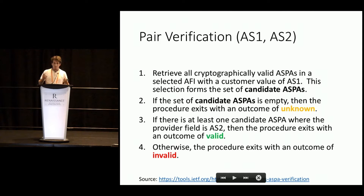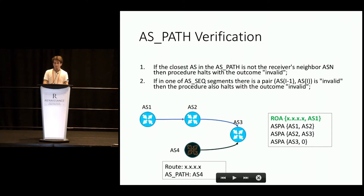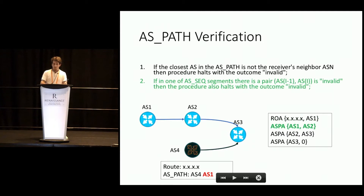The verification procedure is very similar to route origin verification. We are splitting AS paths into pairs where prepend values are ignored. For each pair, we are retrieving candidate ASPAs. If the list is not empty, we check if there is an overlap. If there is no overlap, the outcome is invalid; if there is an overlap, the outcome is valid — just like ROAs. If autonomous system 4 advertises a prefix from its own autonomous system number, it will be detected using ROAs. If it then tries to add autonomous system 1 at the beginning of the AS path, it will be detected because autonomous system 1 has authorized only autonomous system 2 to send its prefixes to upstream providers.